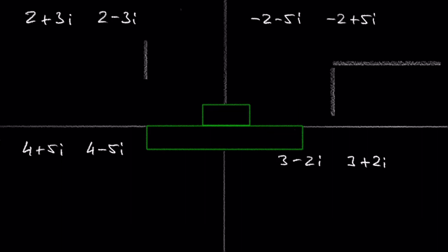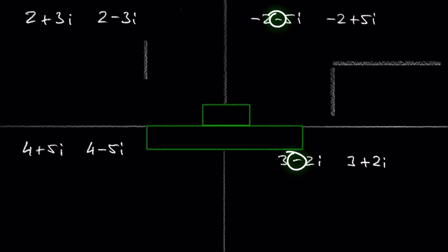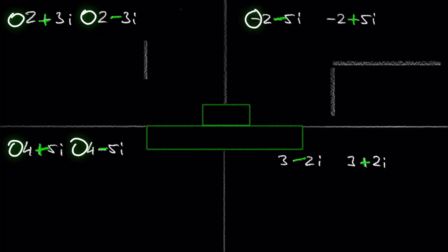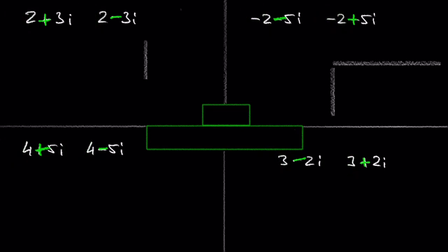Do you see the pattern here? We find the complex conjugate of a complex number by changing the sign of the imaginary part of the original complex number. So a positive sign becomes a negative sign and a negative sign becomes a positive sign. But be careful — don't change the sign of the real number part. Just flip the sign of the imaginary part.